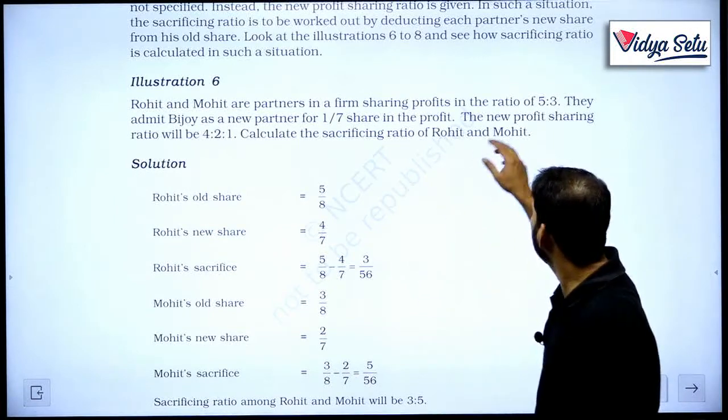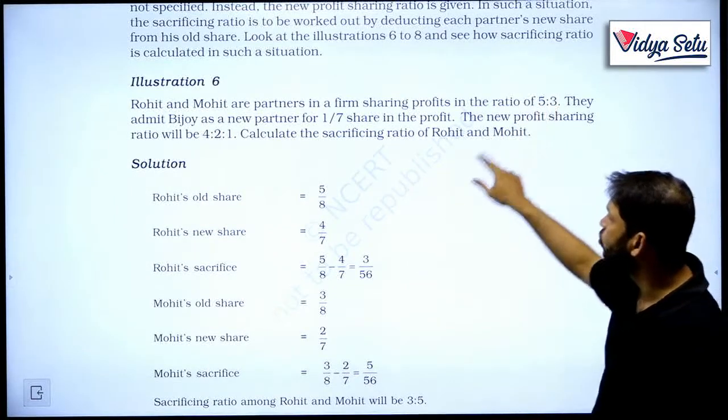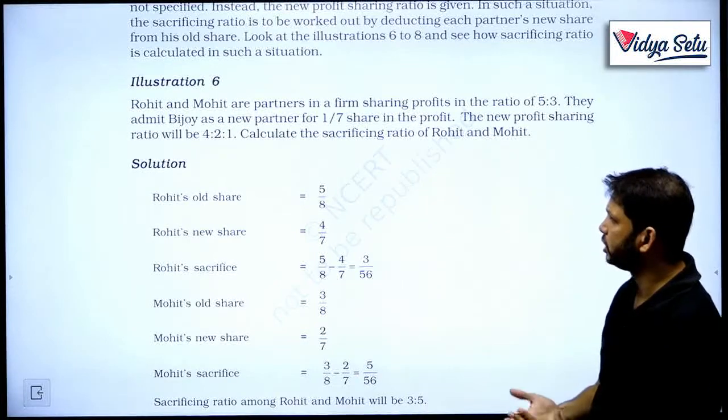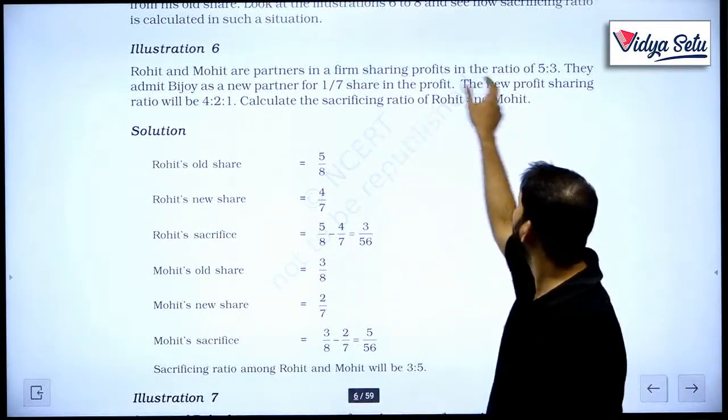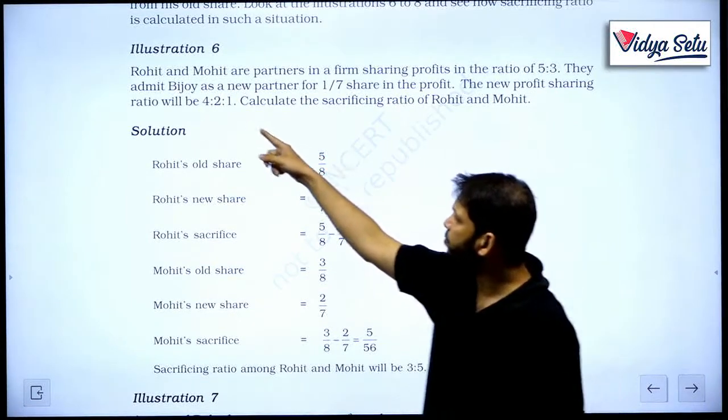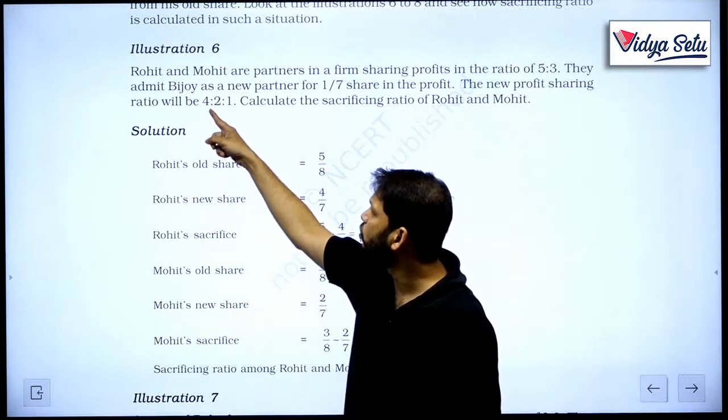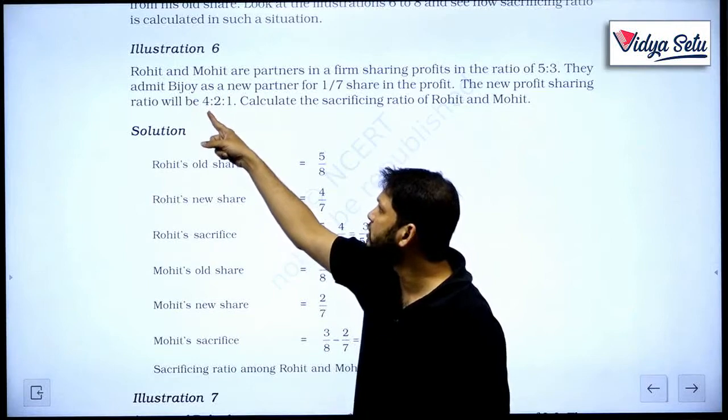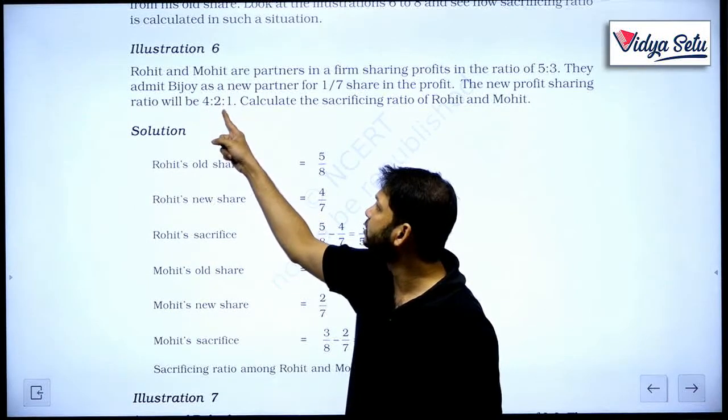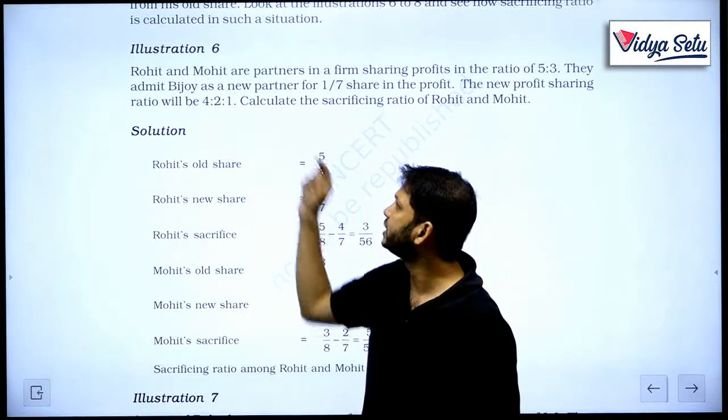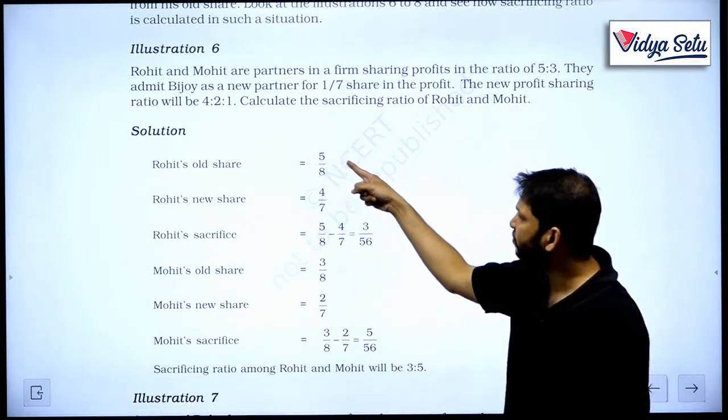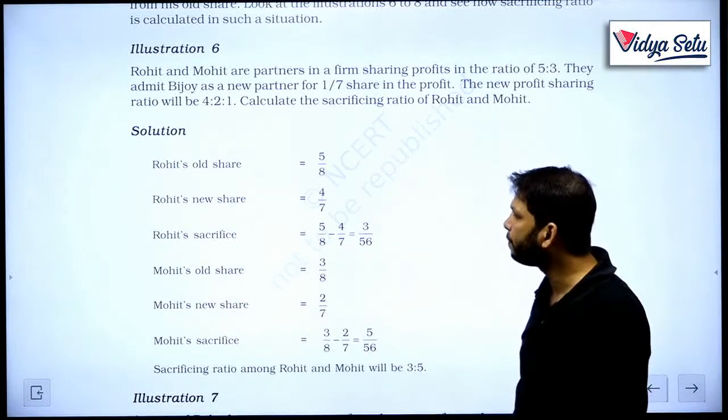The new profit sharing ratio will be 4 is to 2 is to 1. So we already know the old ratio, we know the new ratio, calculate the sacrificing ratio. So let's see. Rohit's old ratio was 5 upon 8. We from this we can find out his new ratio. Rohit's name is first, so this will be 4, Mohit second is 2, and Bejoy will be 1. So 4 plus 2 plus 1, 7. So his old ratio is 5 upon 8, the new ratio is 4 upon 7.